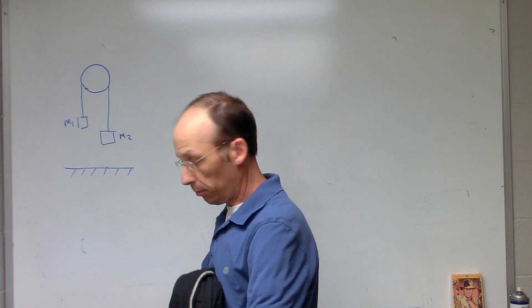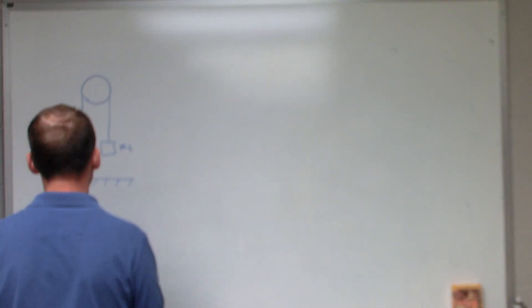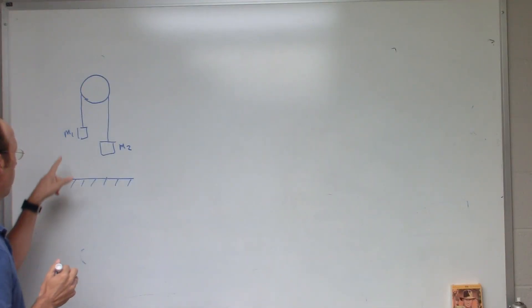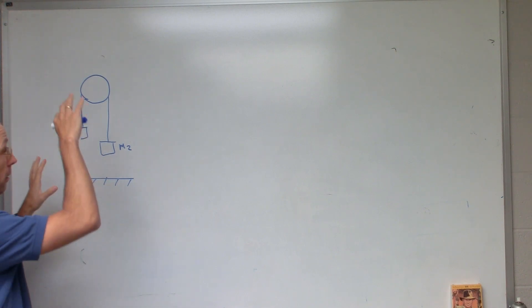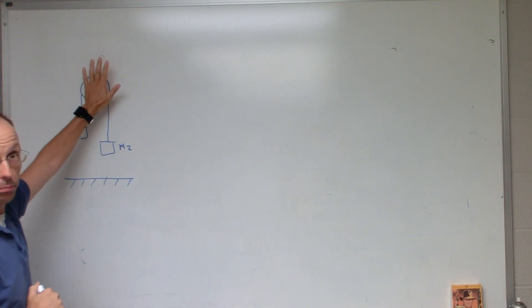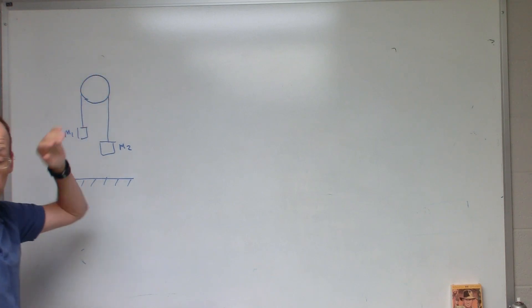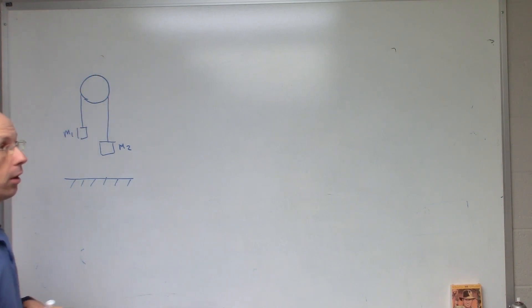Okay, so let's do this problem. This is the Atwood's machine. So I have a mass M1 right here, mass M2 right there, and this is a massless pulley. You can redo the problem with a pulley with mass. I'm gonna do it this way.